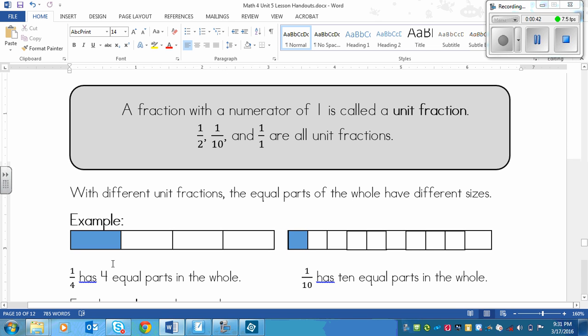Now, with different unit fractions, the equal parts of the whole have different sizes. Now what that means is, you can see it in the example here. So here we have two strips that are the same size. They have the same length.